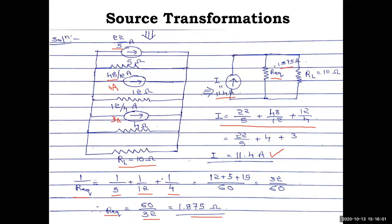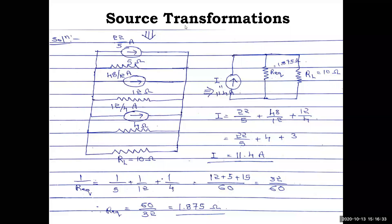The complete circuit is now reduced to a single current source of 11.4 amps, a single parallel resistance of 1.875 ohm, and the load resistance RL of 10 ohm. To find the current through RL, we convert this current source in parallel with resistance back into a voltage source in series with resistance, so we can apply KVL. The formula is V = IR.